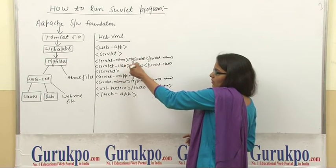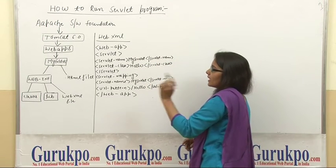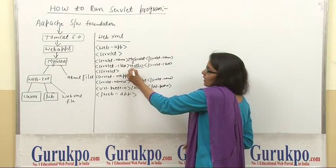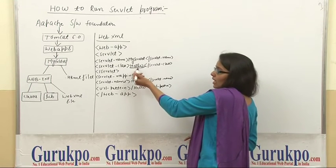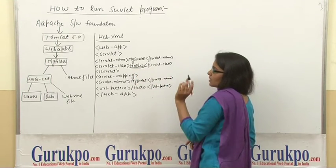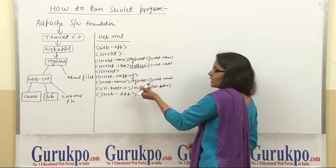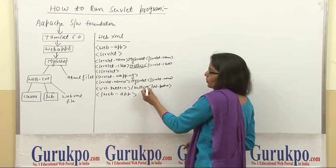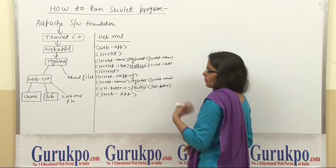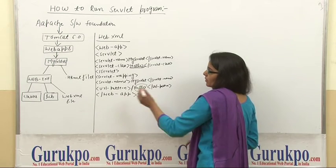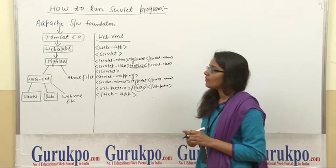Inside the servlet tag, provide the servlet name — for example, I have given "my servlet" — then close the servlet-name tag. The second element is servlet-class, where you provide the Java class file name. Provide the Java class name and close the servlet-class tag. In servlet-mapping, again provide the servlet name which is "my servlet", then provide the URL pattern with your Java class file name as the path. Then close the web-app tag and save this file as web.xml in the WEB-INF folder.